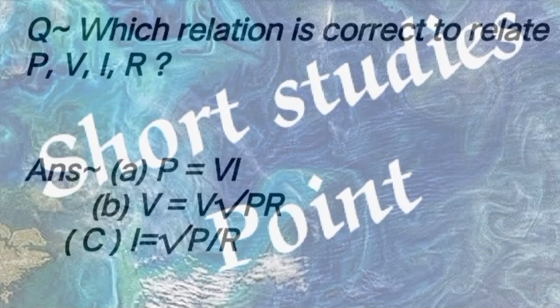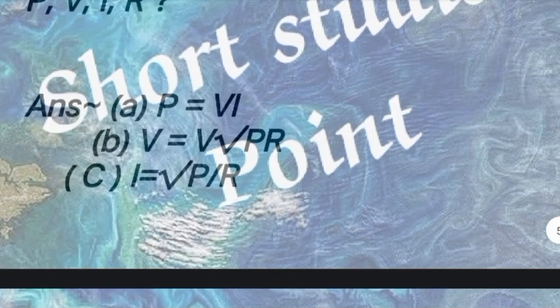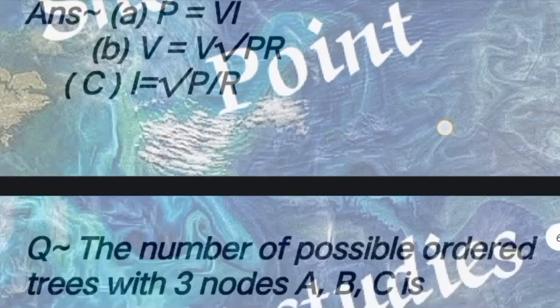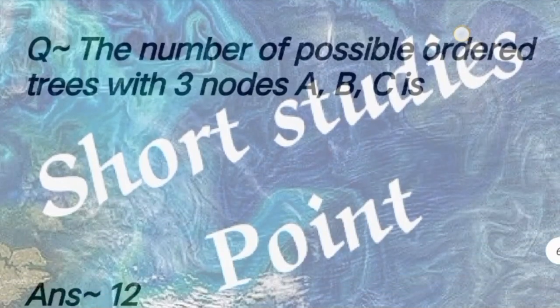Next question: If this relation is correct, to relate P, V, I and R, then P is equal to VI, V is equal to square root of PR, and I is equal to square root of P upon R.